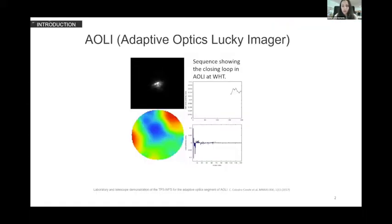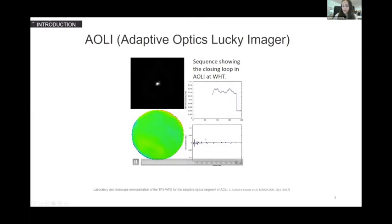To put things in context, this project worked as a consequence of the success achieved for AOLI in the William Herschel Telescope. This instrument was planned as a double system to use adaptive optics and lucky imaging. The sequence shows the closed-loop performance in William Herschel, the science camera with the reference star, the decrease in the root mean square, and the revealed wavefront.